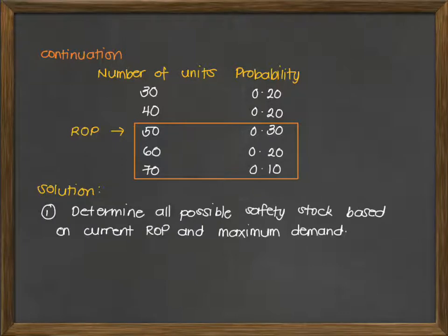To identify the possible safety stock levels based on the current reorder point of 50, we look at 50, 60, and 70. So you have three options. First is to maintain at your current reorder point, which is at 50. Second is to keep a safety stock of 10, meaning papalitan natin yung reorder point natin ng 60 — kasi 50 plus 10 is 60 — para ma-cover yung possibility na maging 60 yung demand natin. And the third option is to accommodate the maximum demand of 70.